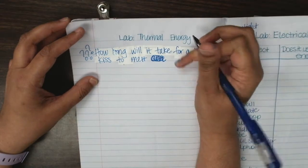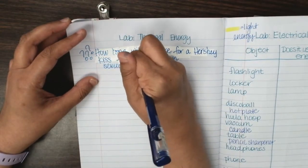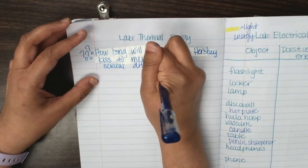How long will it take for a Hershey kiss to melt in several different locations?